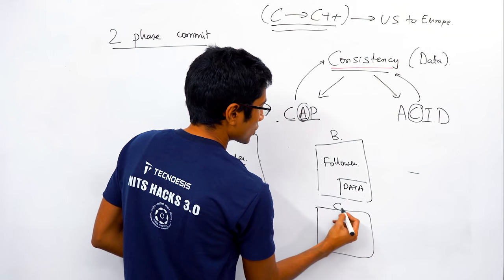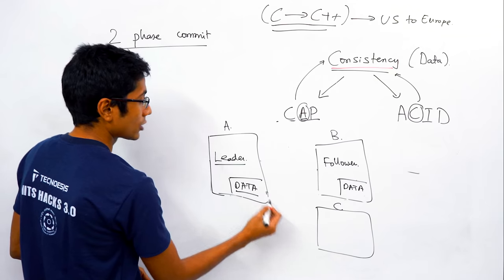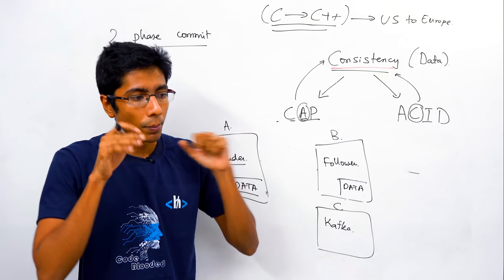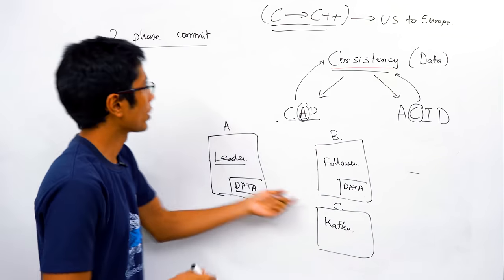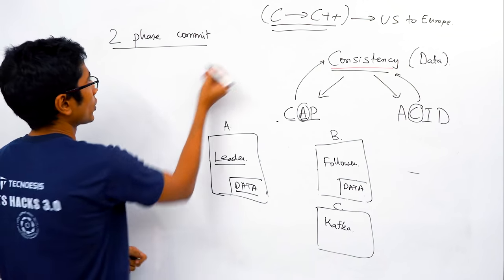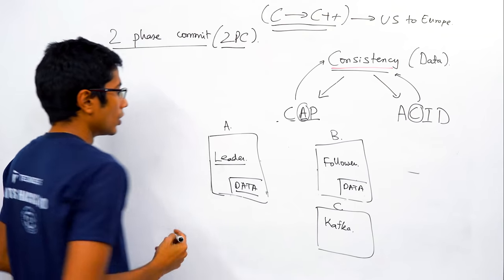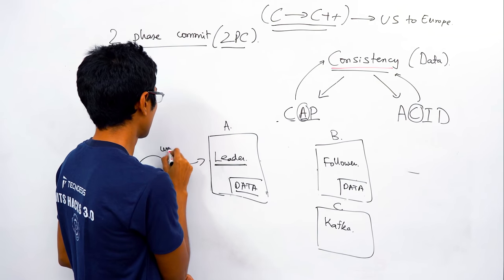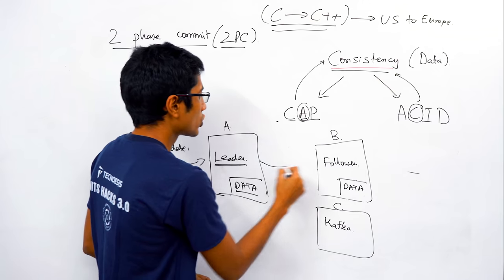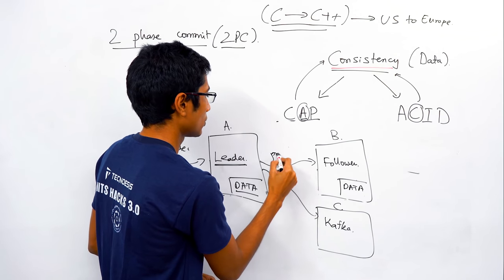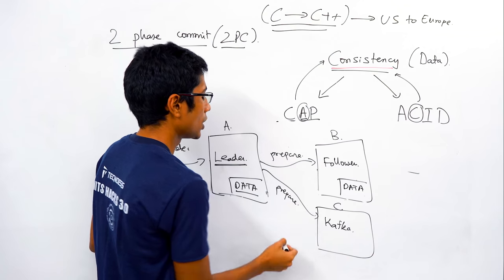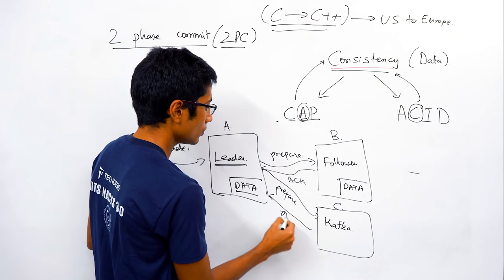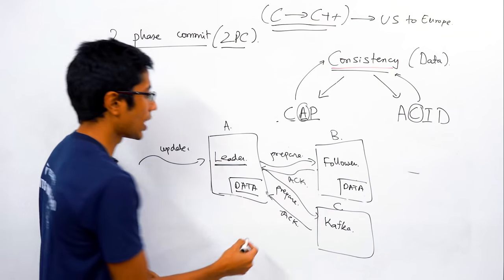These can be generic systems. You could also have a server and Kafka — a message queue. If you want to ensure that an event is pushed into multiple systems, you can go for something as strict as 2PC. The general idea: when the leader gets an update, it sends a prepare request to all followers, and the followers give acknowledgement that they received the prepare request.